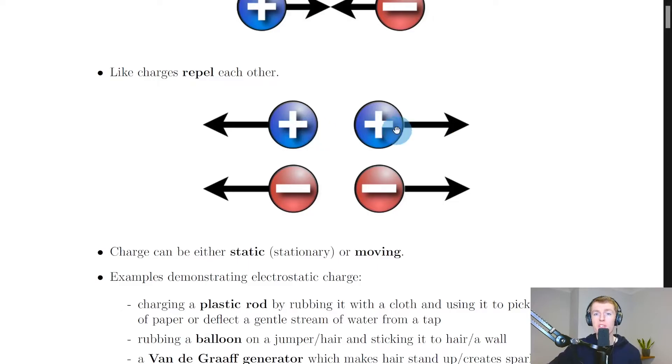So if we have two positive charges near each other, they'll want to get away. And it's the same for two negative charges near each other. They also want to get away from each other. So to understand how charges interact with each other, it's worth remembering that opposite charges attract and like charges repel.